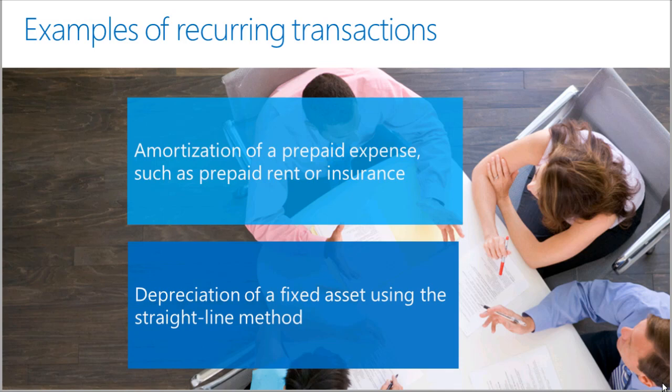Let's first start with explaining what a recurring journal transaction is and situations it may be used for. A recurring transaction is a journal transaction generated on a periodic basis for a fixed amount. A fixed amount means that all of the debits and credits in the transaction are the same amount each time the transaction is generated. The same recurring transaction batch cannot be generated more than once in a period. Examples of recurring transactions may include amortization of prepaid expense, such as prepaid rent or insurance, or depreciation of a fixed asset using the straight line method.